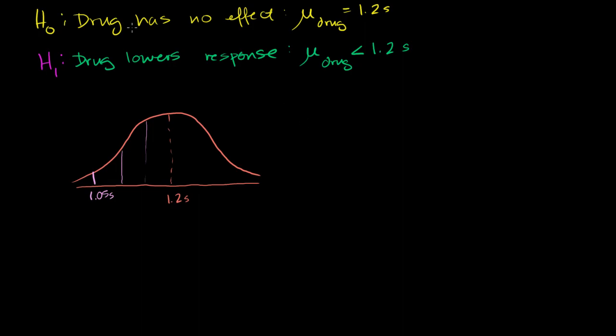If the drug doesn't lower our response time, what was the probability, or what is the probability, of getting a lowering this extreme or more extreme? So here it will only be one of the tails that we consider when we set our alternative hypothesis like that, that we think it lowers.